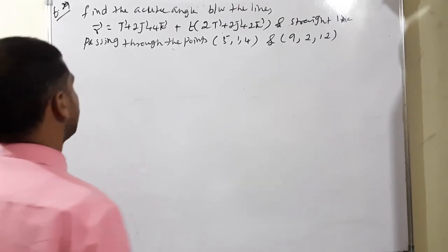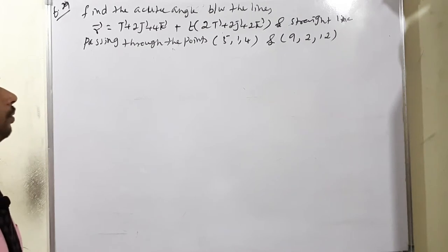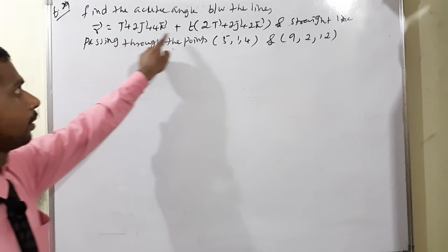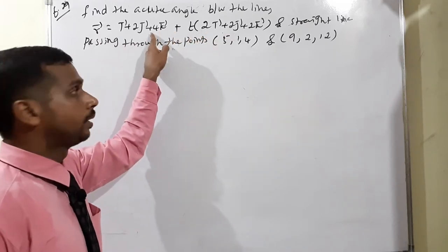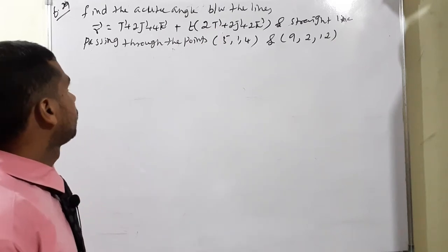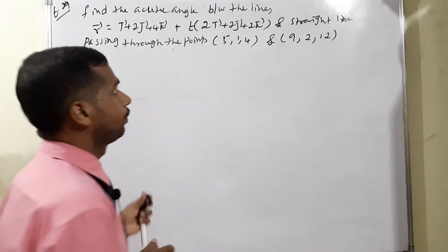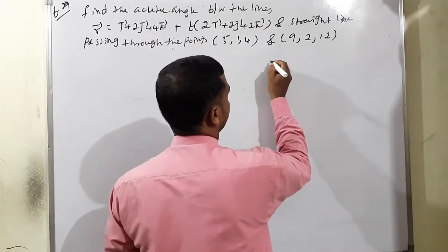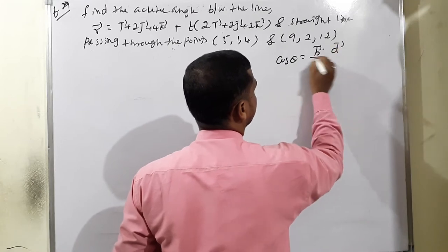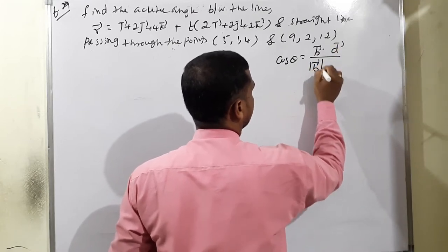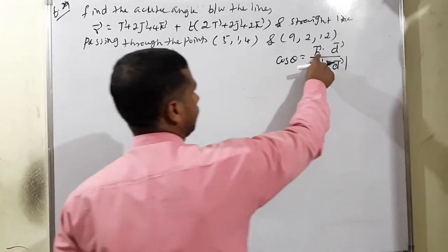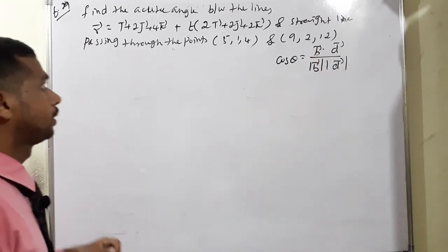Example 6.29: find the acute angle between the lines. One condition is r vector equals a vector plus t·b, where a is the point and b is the direction vector. There is also a line passing through two given points. We know the formula: cos theta equals b·d divided by modulus b times modulus d. Here b and d refer to the direction ratios.